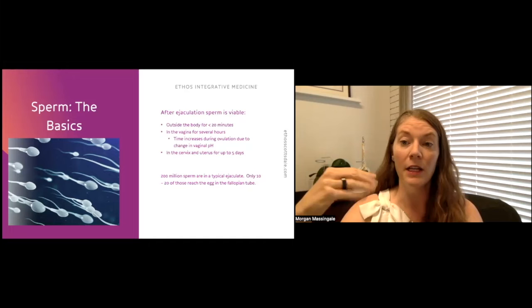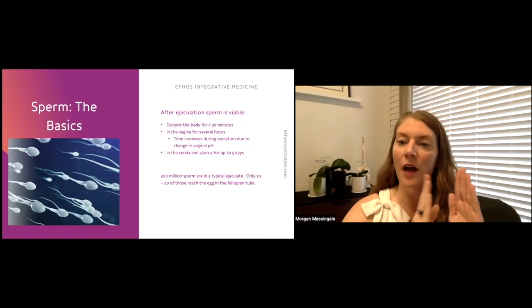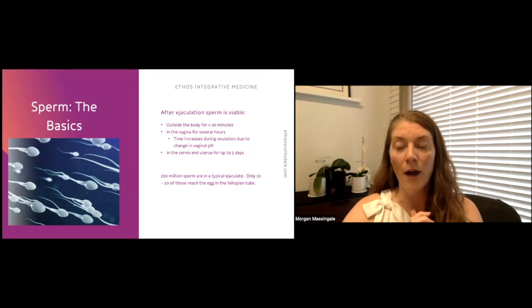If they're able to reach the cervix and uterus, they can actually be viable for up to five days. So if we kind of look at the windows of that 12 to 24 hours of an egg being viable and the five days of a nicely swimming sperm viability, there's about six days within a typical menstrual cycle where you are actually able to conceive.